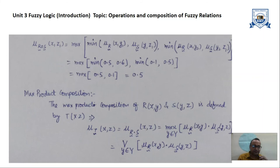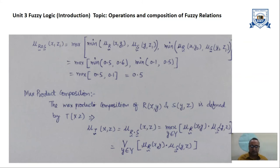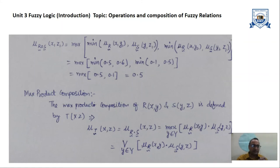There is another way to find the composition of fuzzy relations, and that is known as the max-product composition. Till now we established relationships and learned how to find the composition of relations using max-min composition. The composition of relations can be achieved either by max-min composition or max-product composition. In most scenarios, max-min composition is very useful, but some authors also use the max-product composition technique.